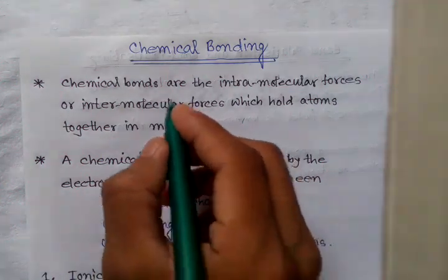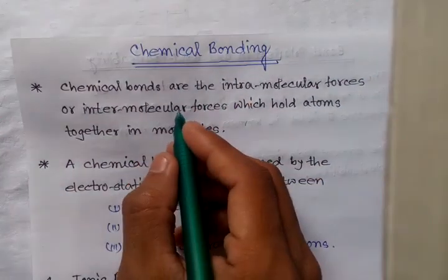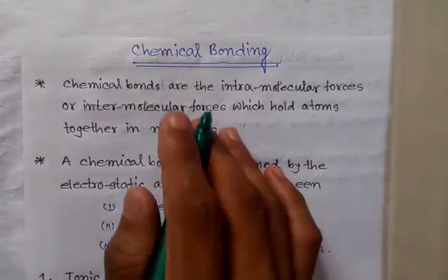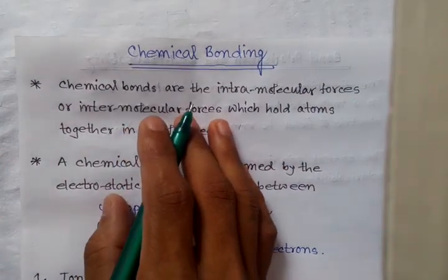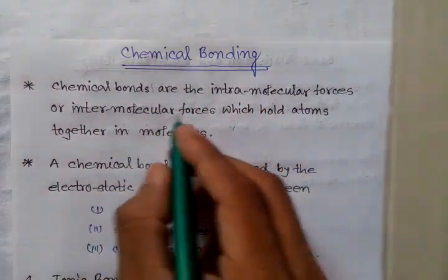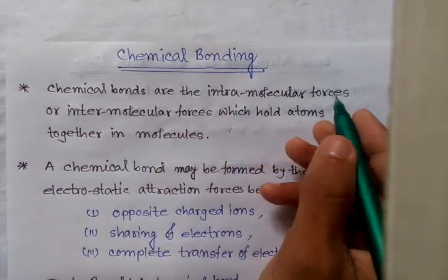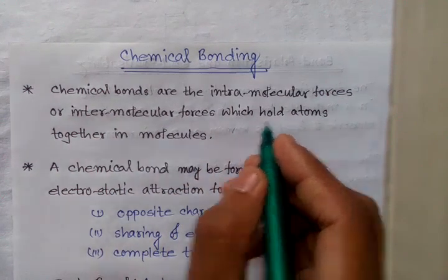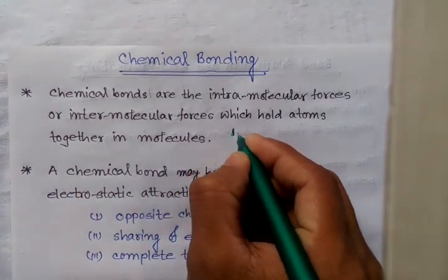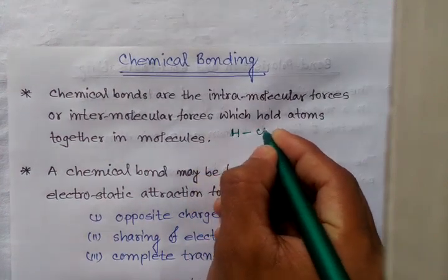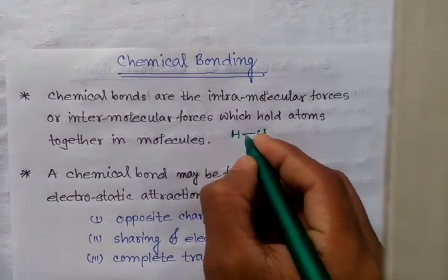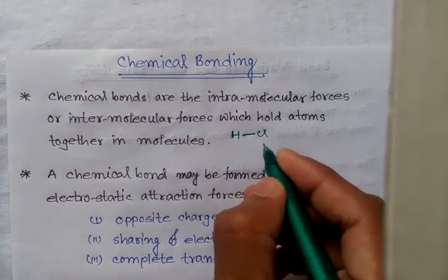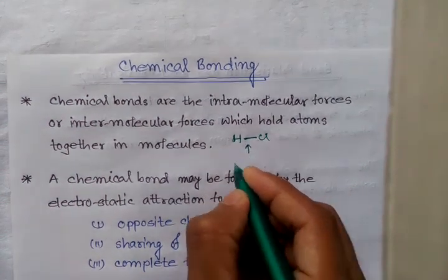Today I am going to discuss chemical bonding. Chemical bonds are the intramolecular or intermolecular forces which hold atoms together in molecules. For example, HCl — this is a chemical bond, and specifically this is an ionic bond.